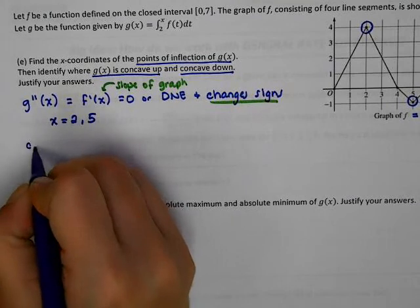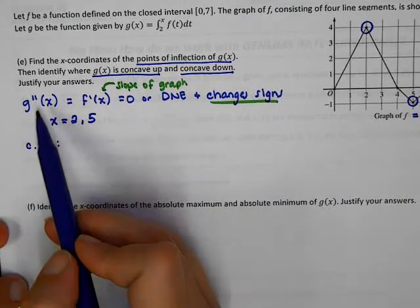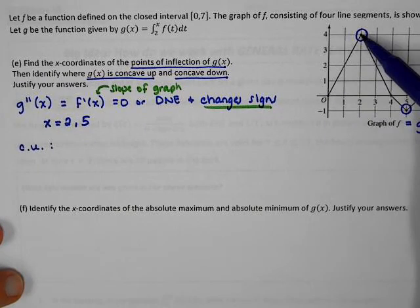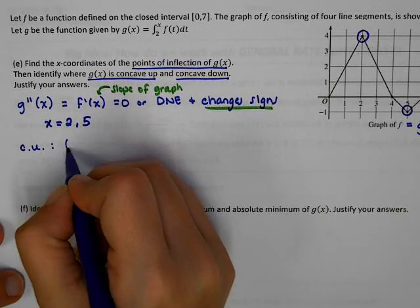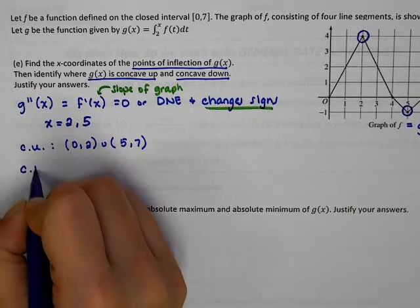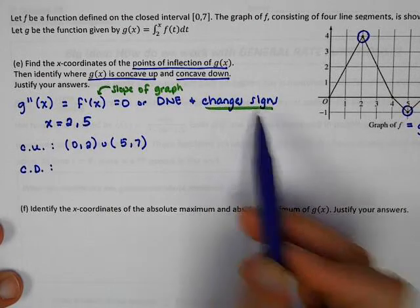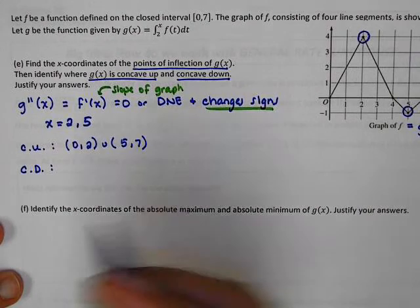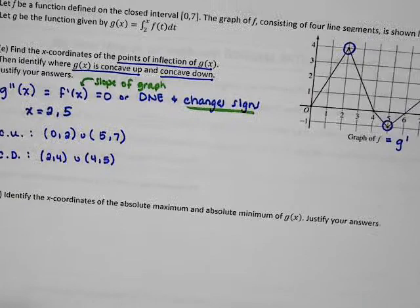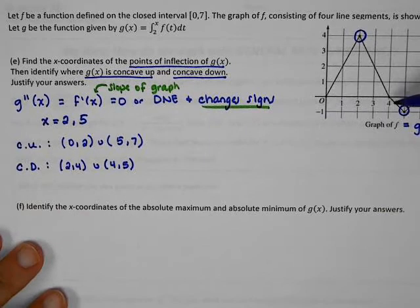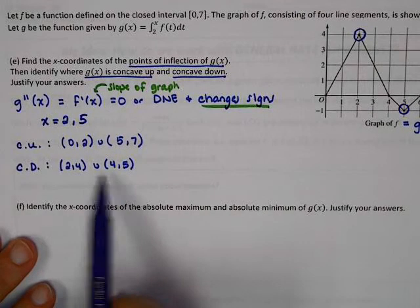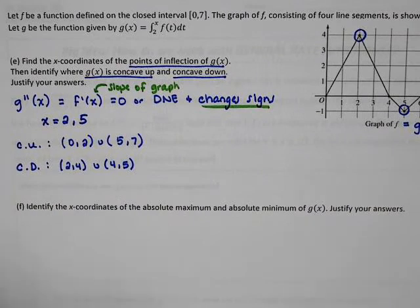g of x is concave up whenever the slope of f is positive, which occurs from 0 to 2 and from 5 to 7. g of x is concave down whenever the slope of f is negative — from 2 to 4 and from 4 to 5. We break this into two intervals because there's a corner at x equals 4 where the slope is undefined, so we can't write one big interval from 2 to 5.